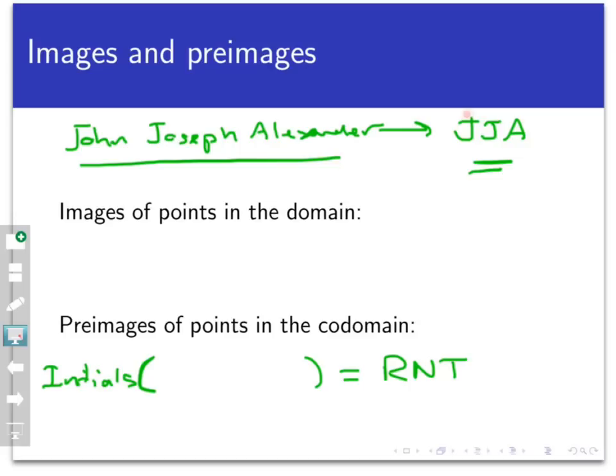But there could be another person like Jessica Jenna Austin, for example, that has the same three-letter initials. You see that quite often in real life. Now, in fact, R, N, T does have one particular point in the codomain. It's my name. My name is Robert Nathan Talbert. And so I would be a preimage of this particular three-letter combination.